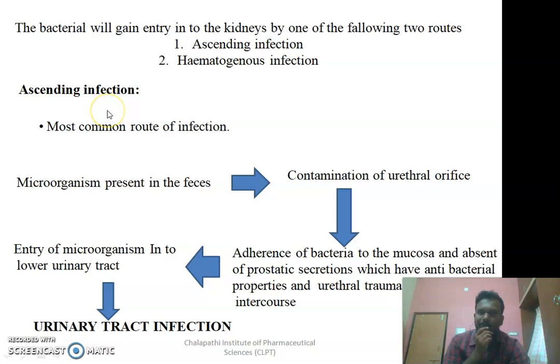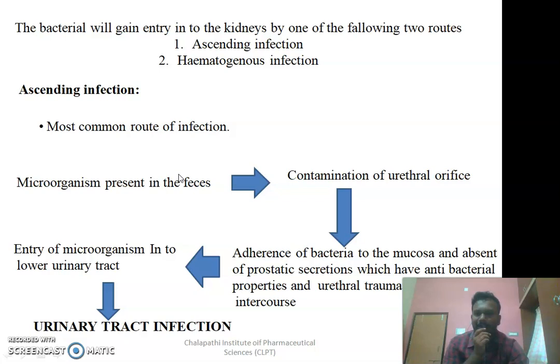The ascending infection is the most common route of infection, where the microorganism — which is present in the faecal matter — enters from the urethral orifice. Whenever an individual does not maintain proper vaginal hygiene or faecal hygiene, that microorganism will enter from the anus to the urethral orifice. From the urethral orifice, the bacteria will slowly move upwards by adhering to the urethral walls and then move to the urinary bladder. Sometimes it will also occur during sexual activity.